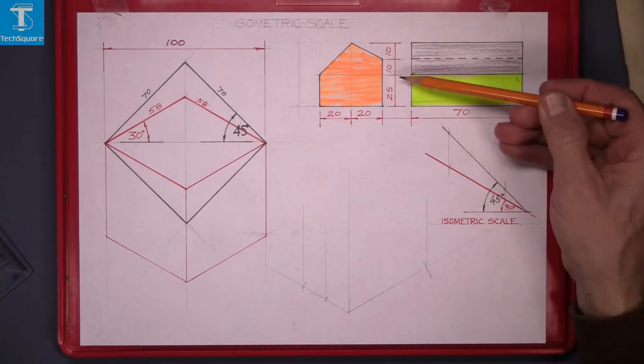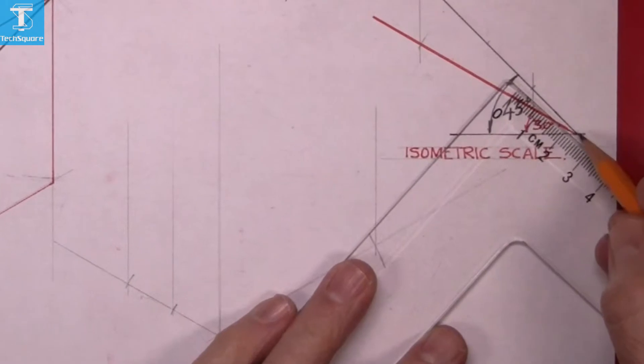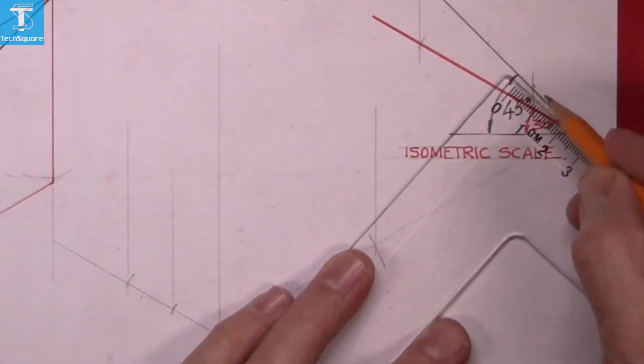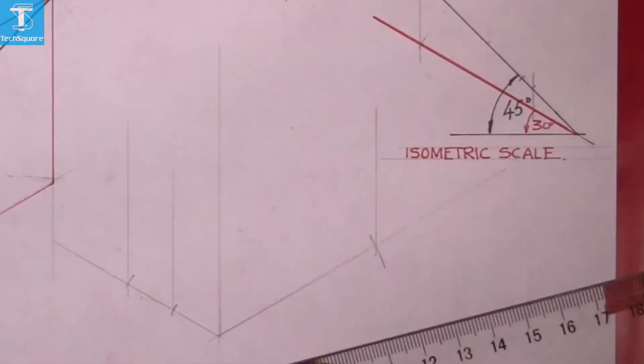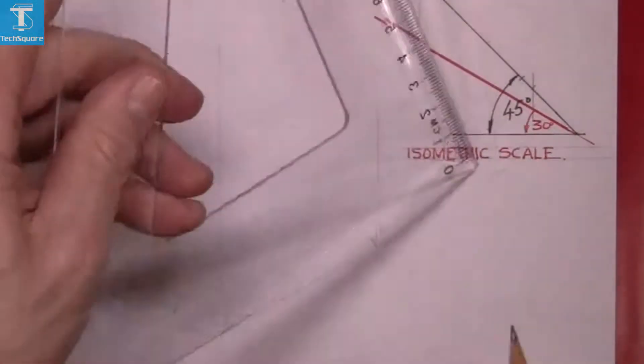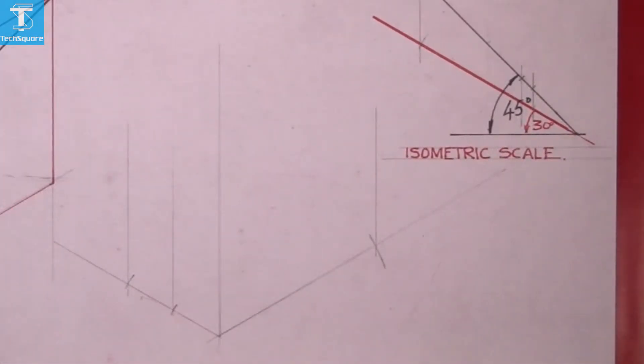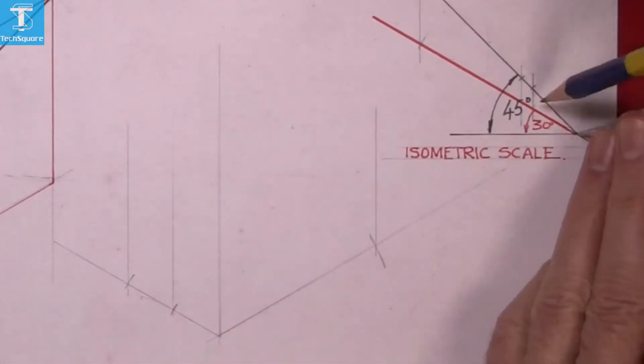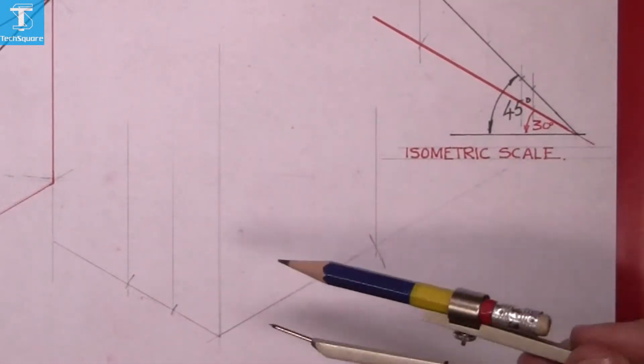The height is 25 and 10 and 10. So measure up 25 first, draw vertically down. Take the length now on the red line and mark it up on the corner here.